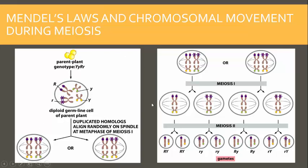The first law is the law of segregation. As you can see in our parent cell, there are four chromosomes and they are in two pairs. In the law of segregation, you can see how each gamete ends up with either a green or yellow chromosome, and either a plain or starred purple chromosome.